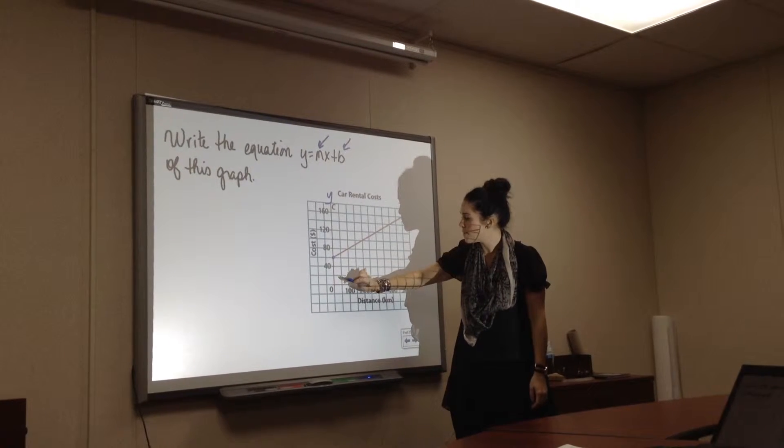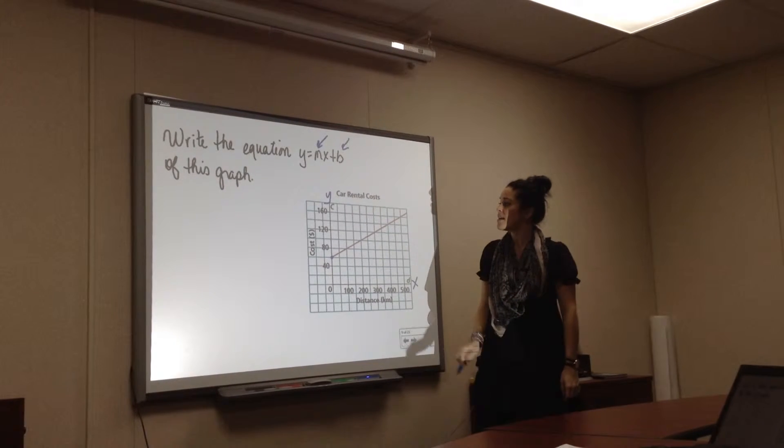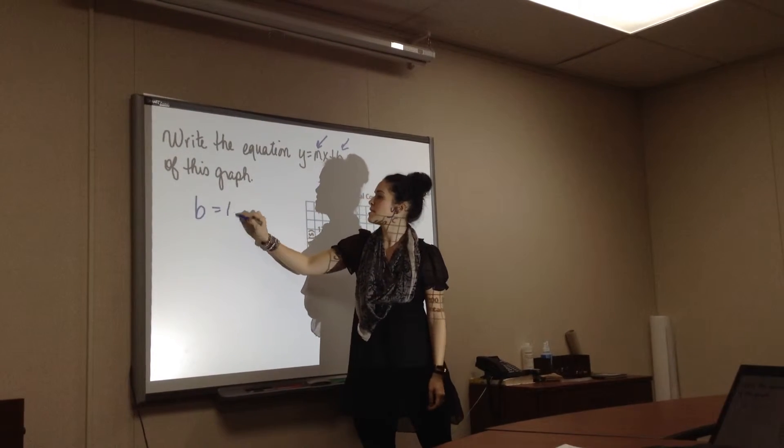it jumps at every 20. So 20, 40, 60. So the b would actually be 60. So you can write it here if you want, b equals 60.